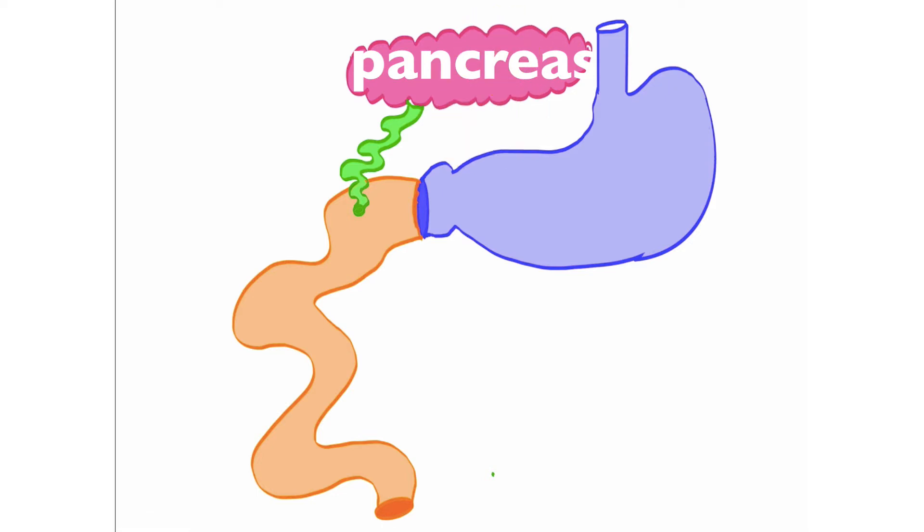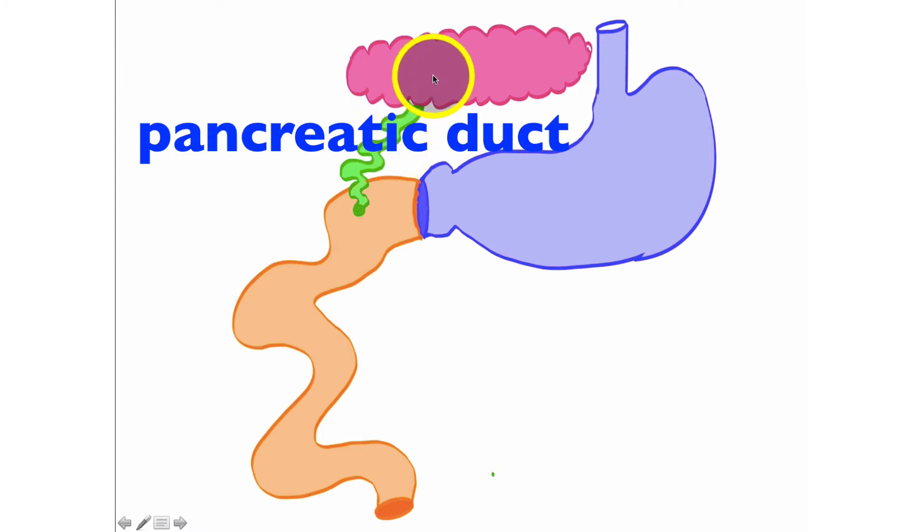But the pancreas also has exocrine functions that are related to digestion. Right here is a pancreatic duct, which allows for pancreatic secretions to move from the pancreas into the duodenum.